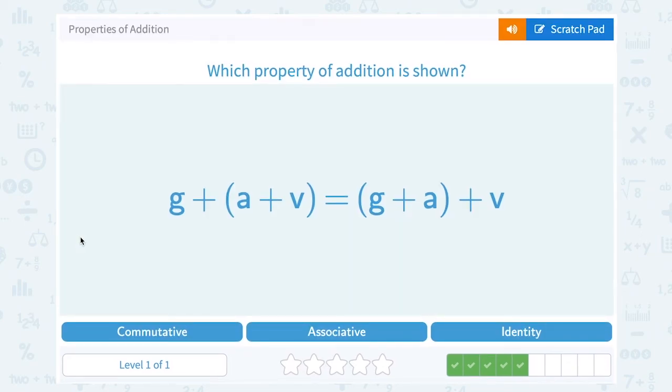G plus the quantity A plus V equals the quantity G plus A plus V. Well much like the last question, they're changing the order we add by moving the grouping symbols. This one tells us to add A plus V first and then G. This one tells us to add G plus A first and then V. Now of course, we're going to get the same answer because you can add in any order. But since they're moving the grouping symbols to change the order, that's an example of the associative property.